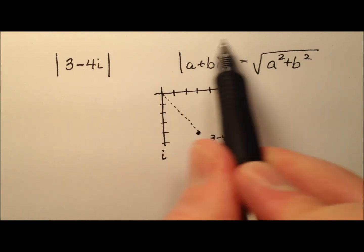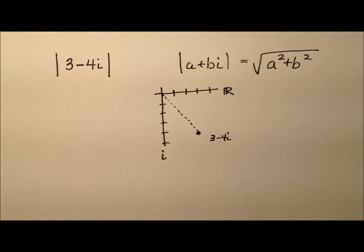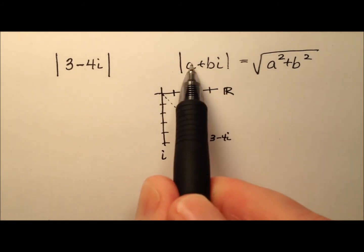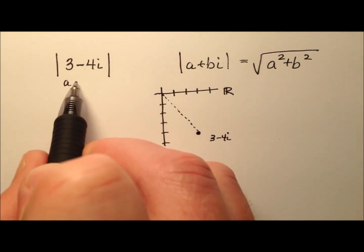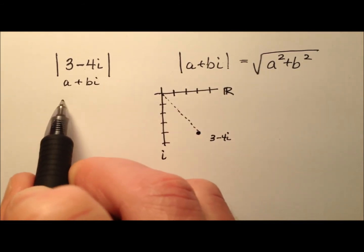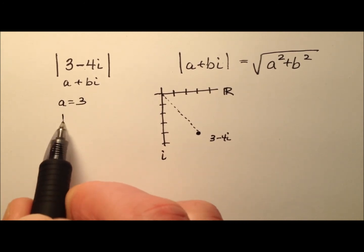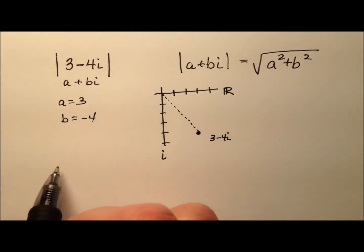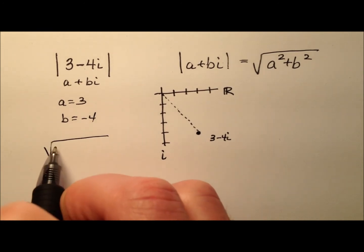So let's go ahead and use the formula. And here's the kind of graphical representation. So a plus bi, it looks like my a is 3 and my b is negative 4. So let's go ahead and just plug these values in.